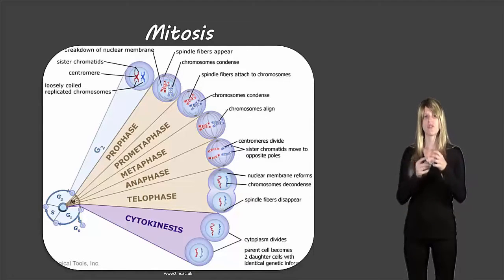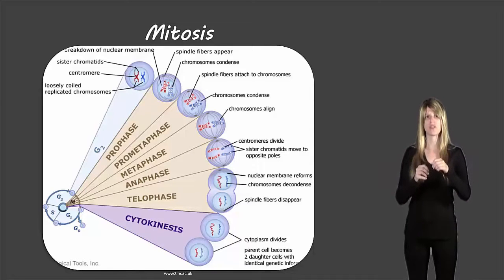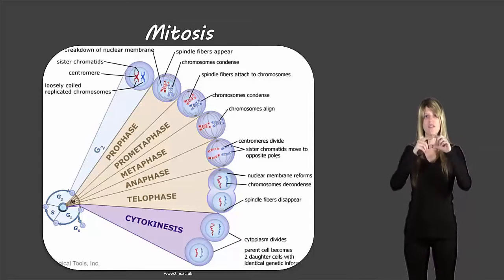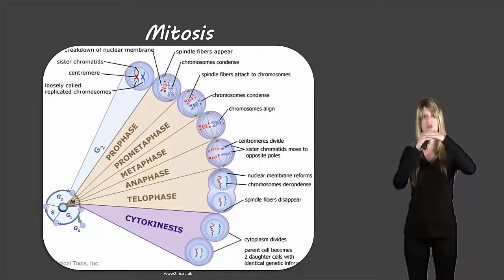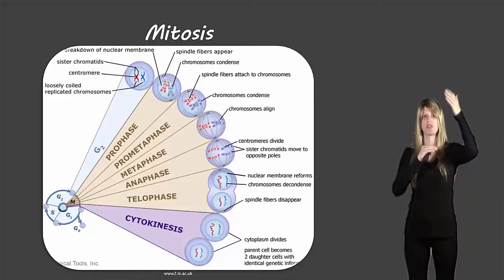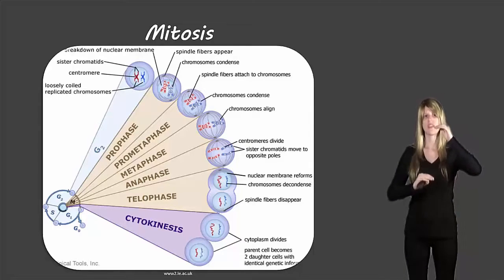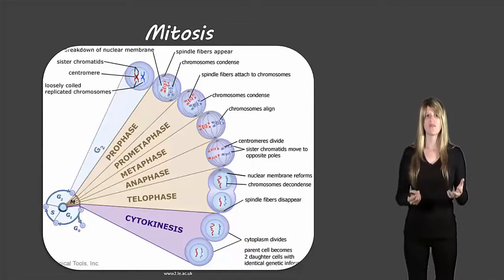In prometaphase, the chromosomes finish condensing and the spindle fibers actually attach to the chromosomes. Then in metaphase, all of the chromosomes align along the metaphase plate — the center of the cell. You end up with one of each pair of chromosomes on each side of the metaphase plate, so that when they separate, one chromosome goes toward one end and the other toward the other end.